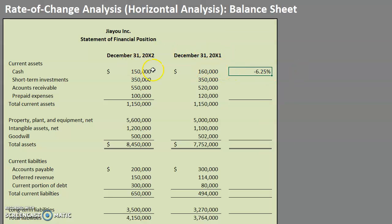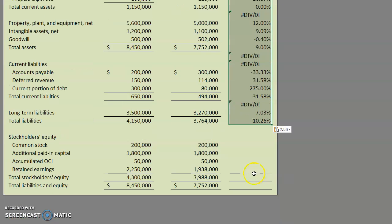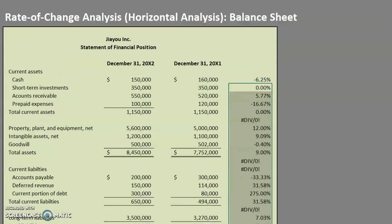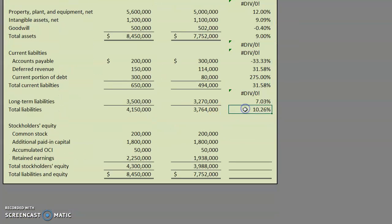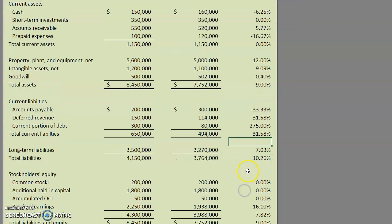We can see that during this year for this particular company on their balance sheet there was a 6.25% decrease in cash. For the horizontal analysis this formula stays the same for every line item, so we can take this and drag it all the way down. Now it's simply telling us all of the increases and decreases that this company experienced during the period.